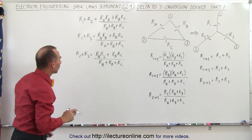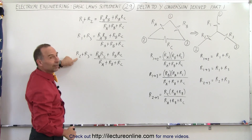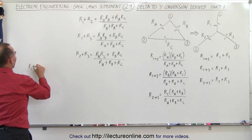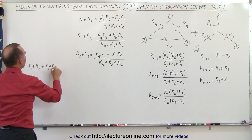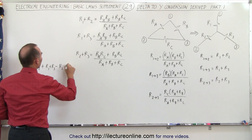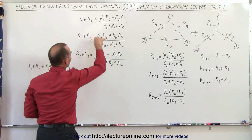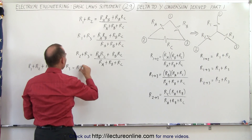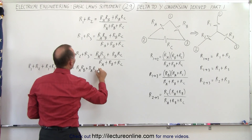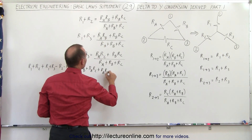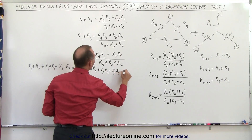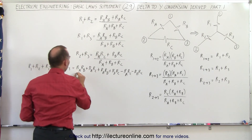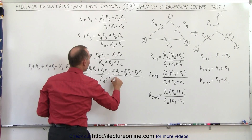Now comes the trick. We add the first two equations together and subtract the third. On the left side: (R1 + R2) + (R1 + R3) − (R2 + R3). On the right side we sum the corresponding numerators: (RA·RB + RA·RC) + (RA·RB + RB·RC) − (RA·RC + RB·RC), all over the common denominator (RA + RB + RC).